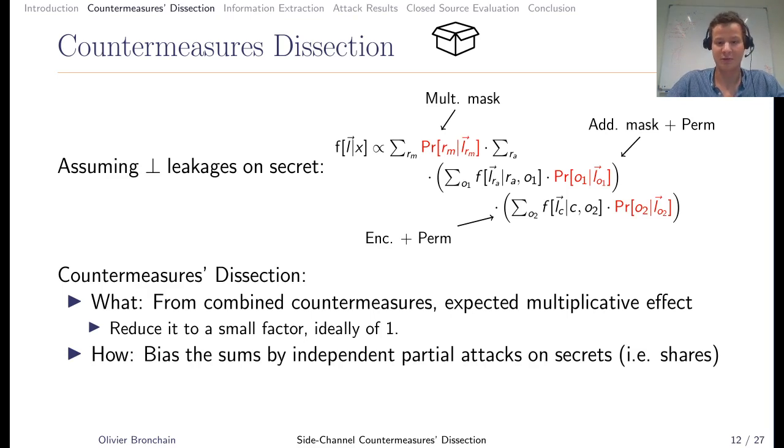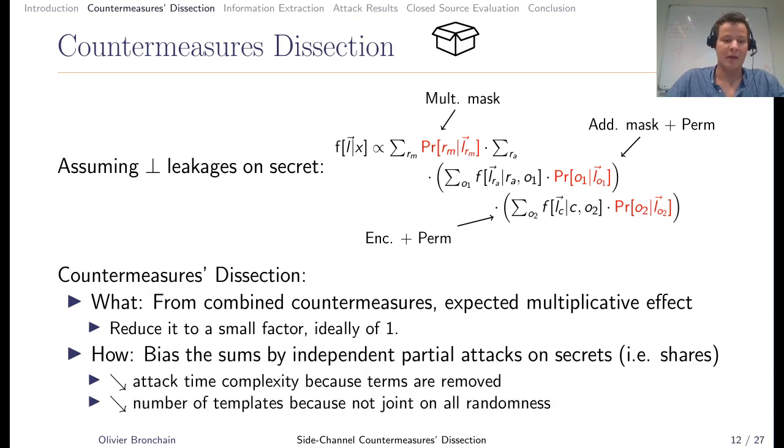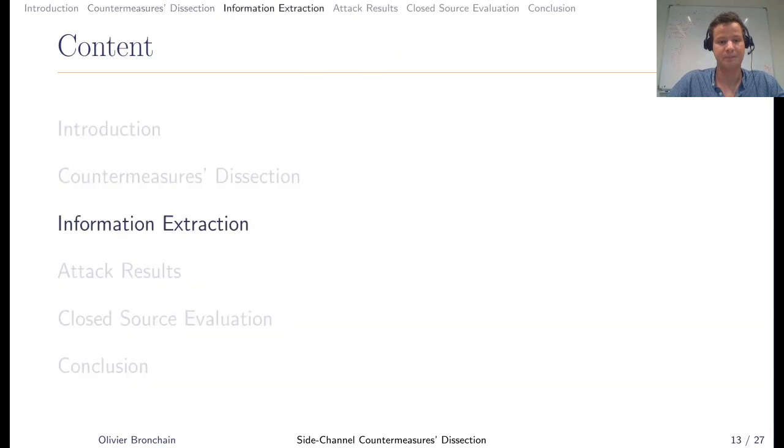How do we do that? We launch attacks on partial pieces of the secret, and this will allow us to bias the sums. Ideally, this will bias the sum to the point that there are terms we can skip. It also reduces the number of templates because there is not one huge template on all possible randomness, but templates based on fewer bits of randomness.